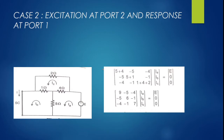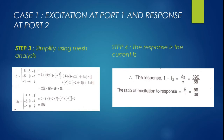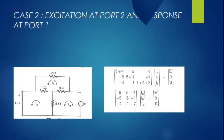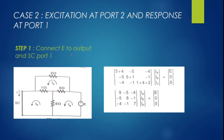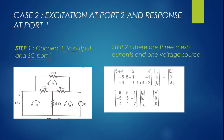In Case 2, I connect the source to port 2 and measure the response at port 1, short-circuiting port 1. There are again three mesh currents, now named Ia, Ib, and Ic to avoid confusion. Since the voltage source is now at the first mesh (corresponding to port 2 side), Ia is the first current, Ib the second, and Ic the third.